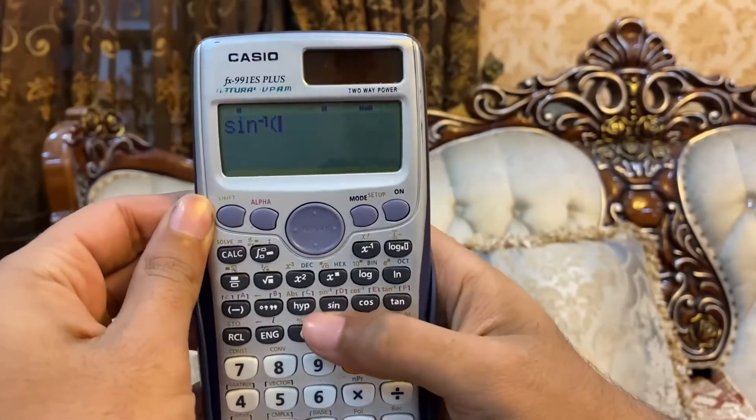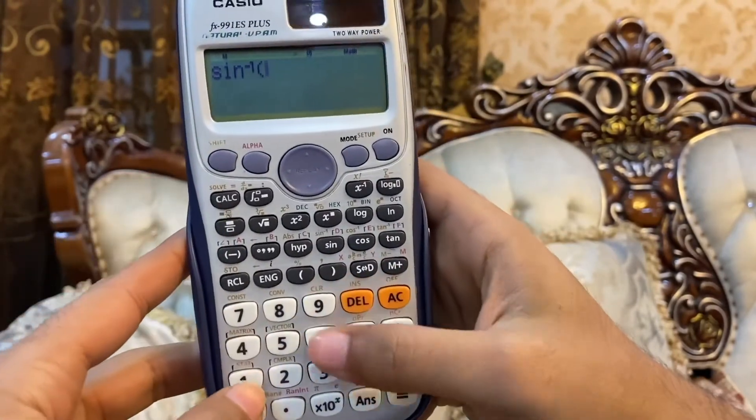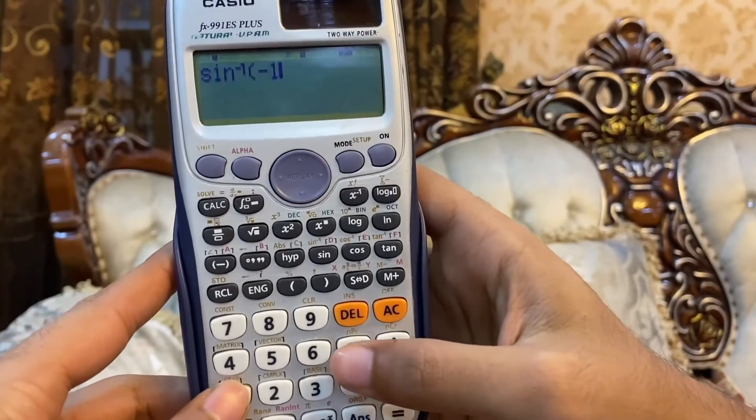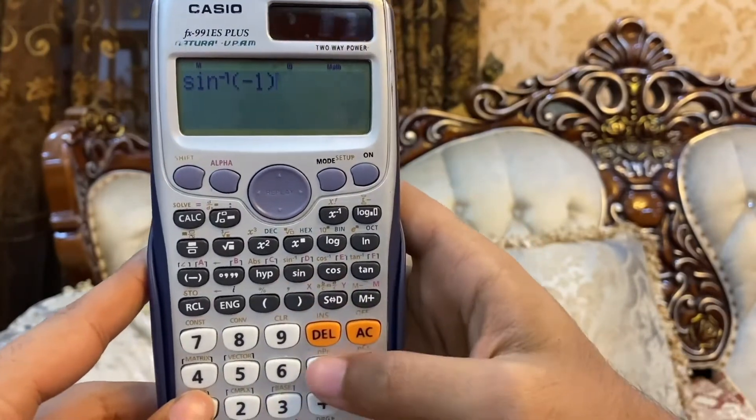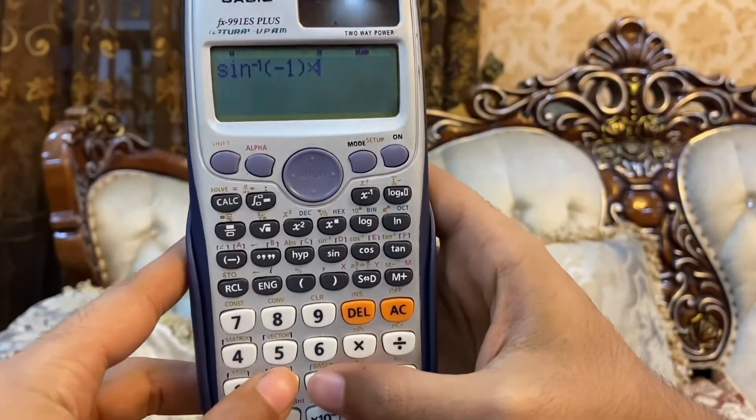Write the sine inverse. The sine inverse is minus 1. Close the bracket and multiply by 23.